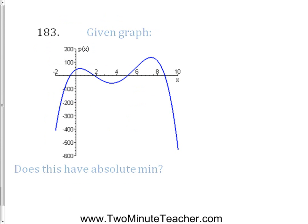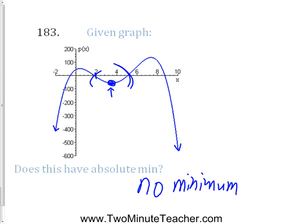Given this graph, does it have an absolute minimum? It's a bit vague because it doesn't have arrows on the ends — it really should. We have to assume it's going forever in the downward direction. Some people would say the minimum is negative infinity, but I'd argue you can't call it that because infinity is just a concept you'll never reach. So I'd say there is no absolute minimum. It does have a local minimum locally in that area, but it's not the lowest overall — it keeps going forever.